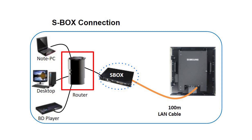Connect the HDBT out of the S-Box with the HDBT in of the cabinet using the LAN cable. Check that the input source of the first cabinet is set to HDBT by using the source button on the cabinet.